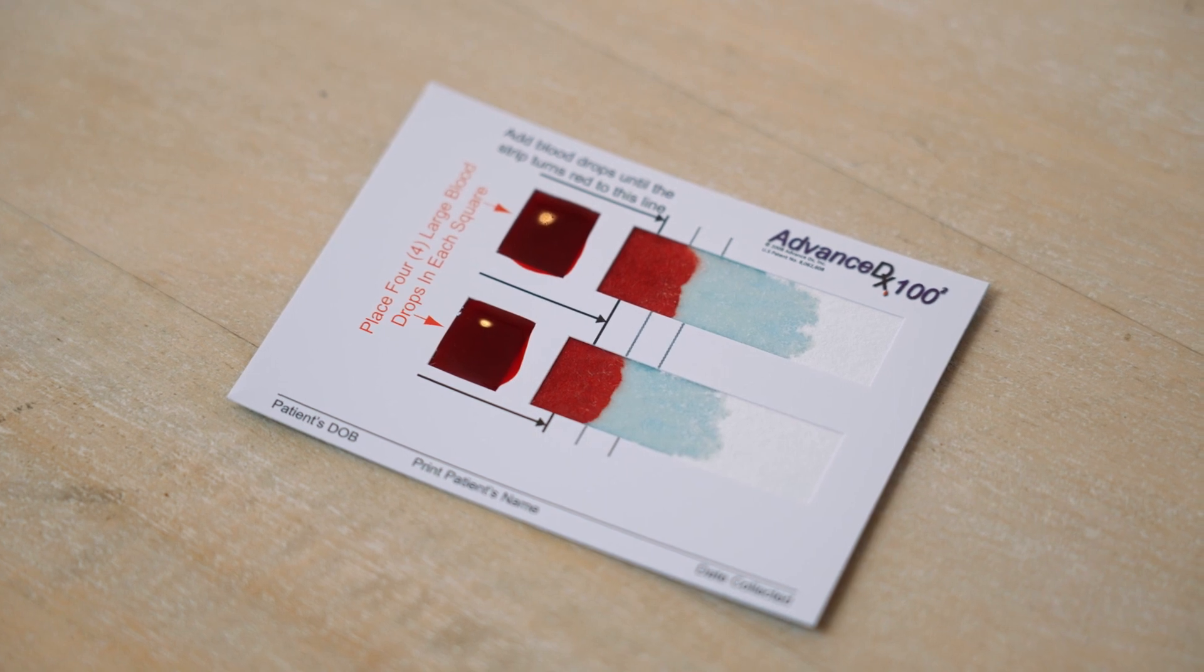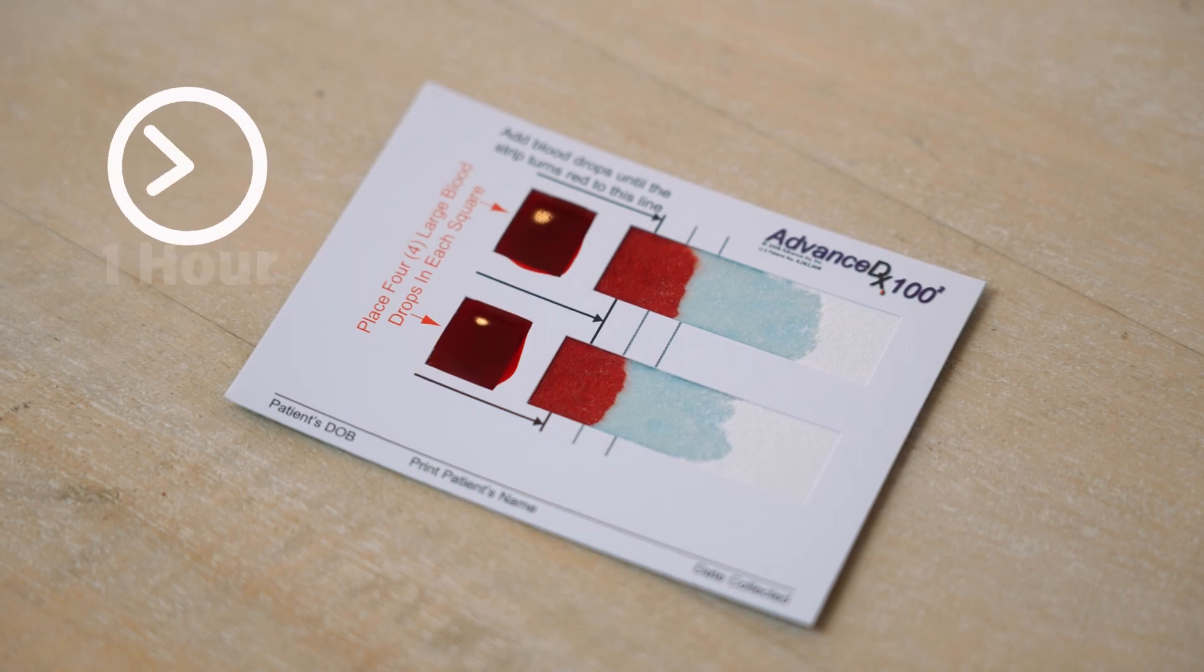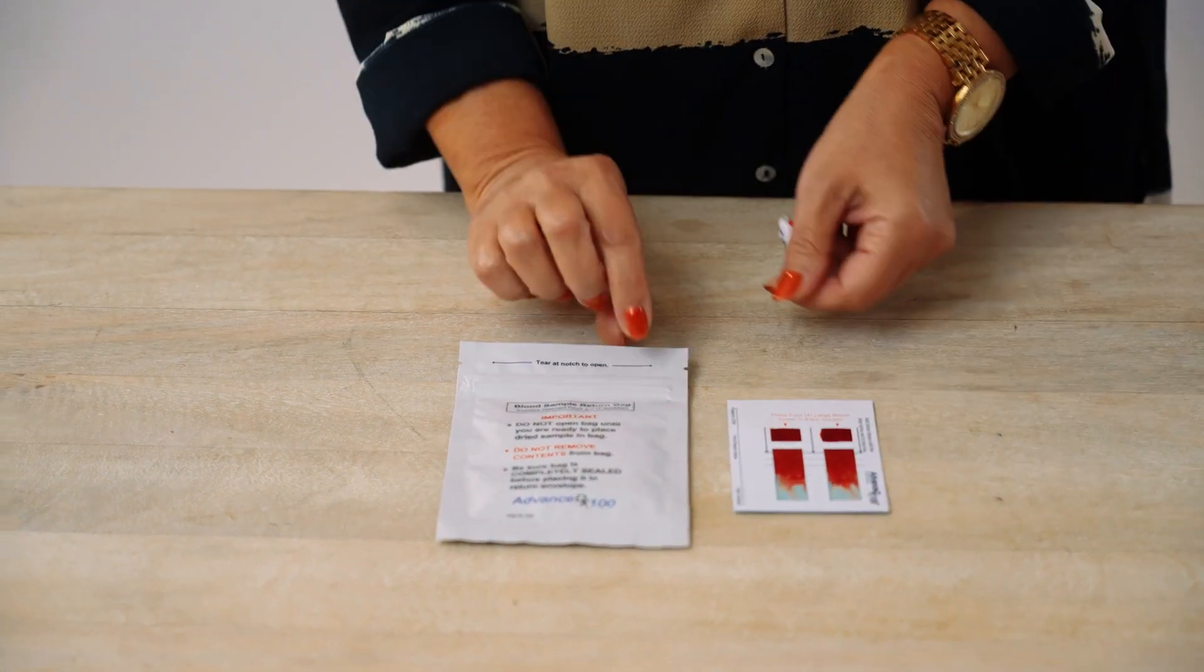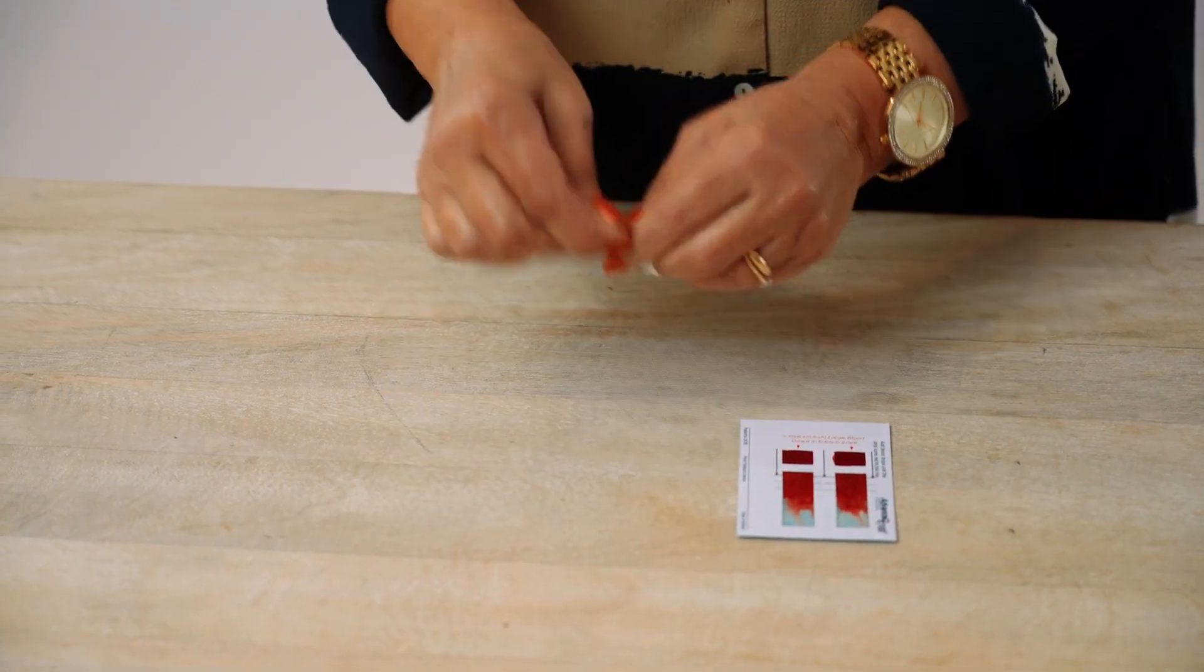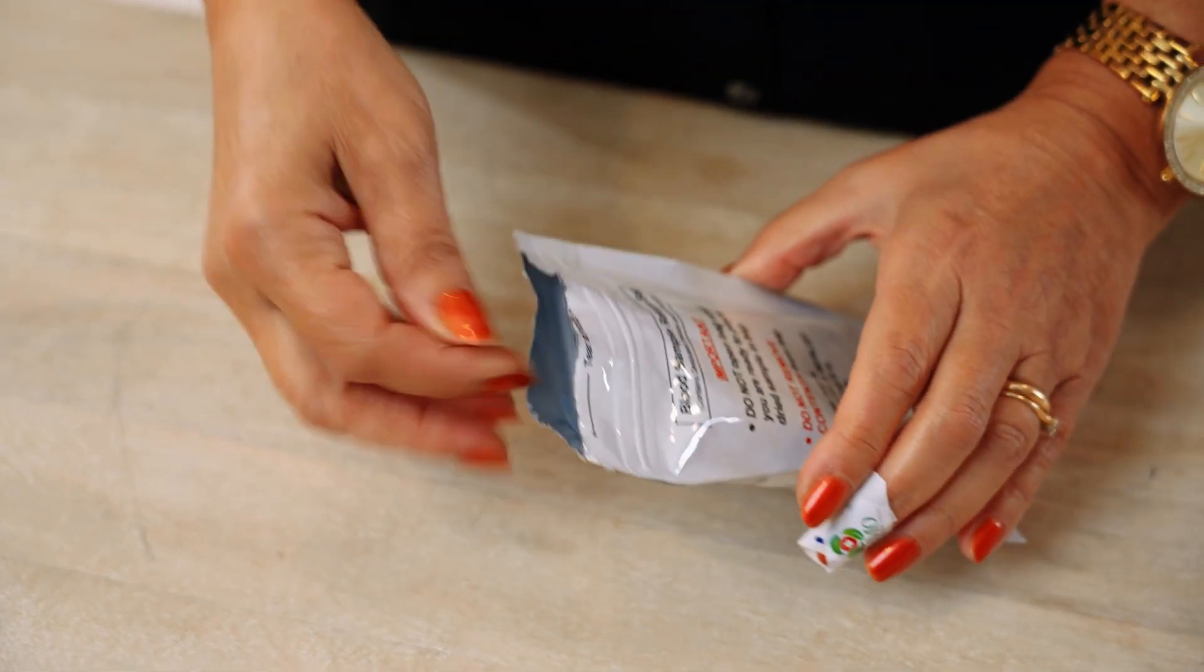Allow the collection cards to dry for one hour. Afterward, tear open the white blood sample return bags at the notches. Place the dried collection card into its sample return bag and seal it.